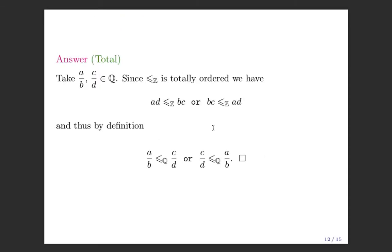For totality: given any two arbitrary fractions a/b and c/d, since the integer ordering is a total ordering, either ad ≤ bc or bc ≤ ad. By definition we can conclude that either a/b ≤ c/d or c/d ≤ a/b, and this proves totality. So this is how it feels to be in a math class. I hope I haven't bored you too much.